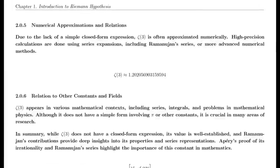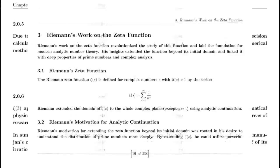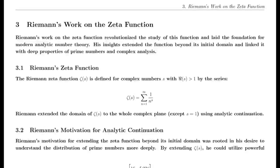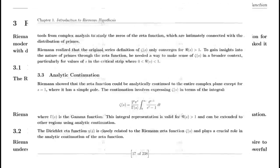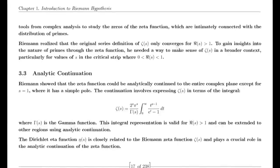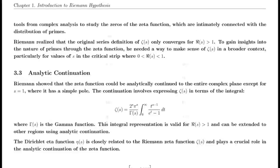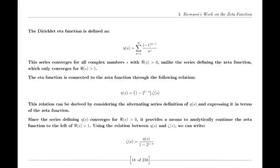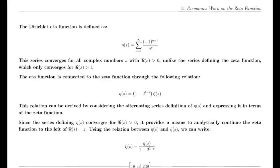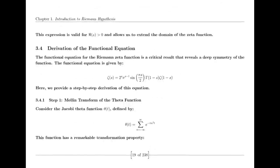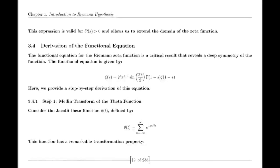Finally, we address the Riemann hypothesis itself. Riemann proposed that all non-trivial zeros of the Zeta function lie on the critical line where the real part of S is one half. This hypothesis has profound implications for number theory, particularly in understanding the distribution of prime numbers. Despite extensive numerical evidence supporting the hypothesis, a formal proof or disproof remains one of the greatest challenges in mathematics.